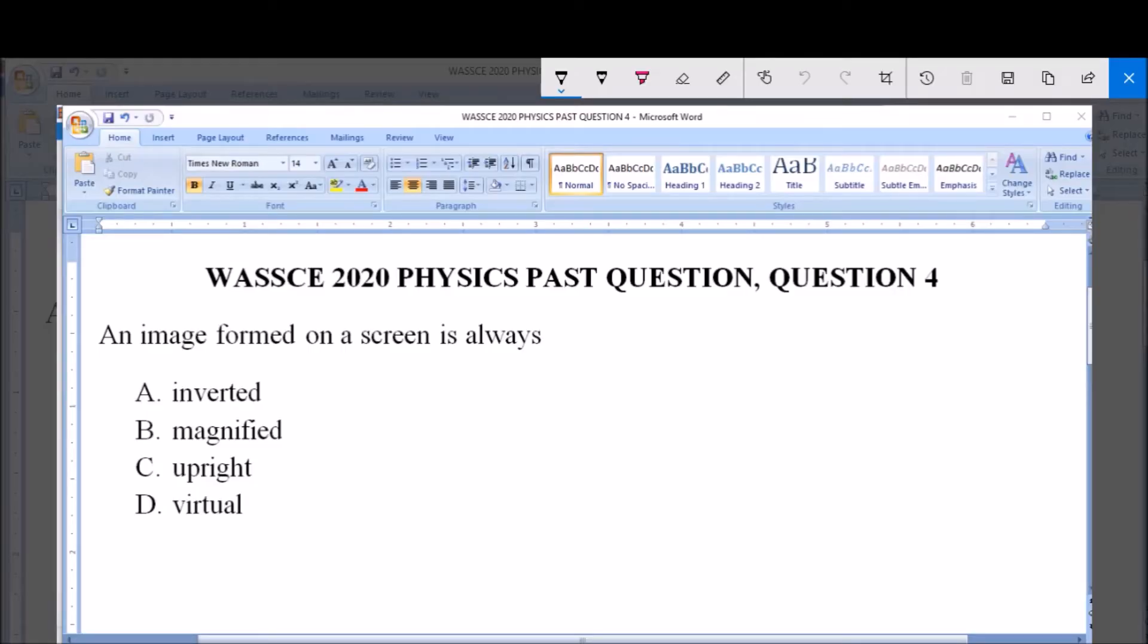Hello, good day and welcome. I'll be answering WASSCE 2020 Physics past question, question 4. An image formed on a screen is always: A) inverted, B) magnified, C) upright, and D) virtual. So now, an image formed on a screen is always...